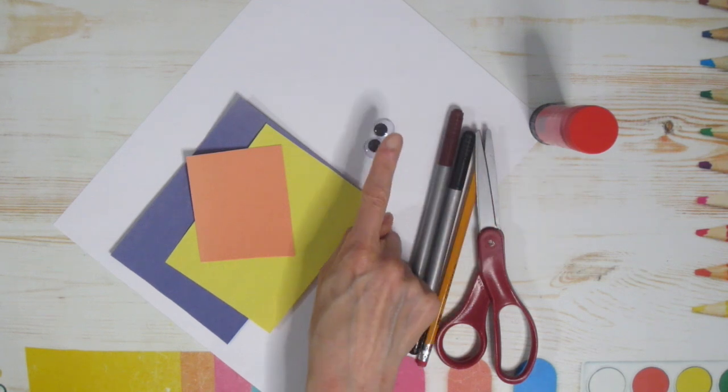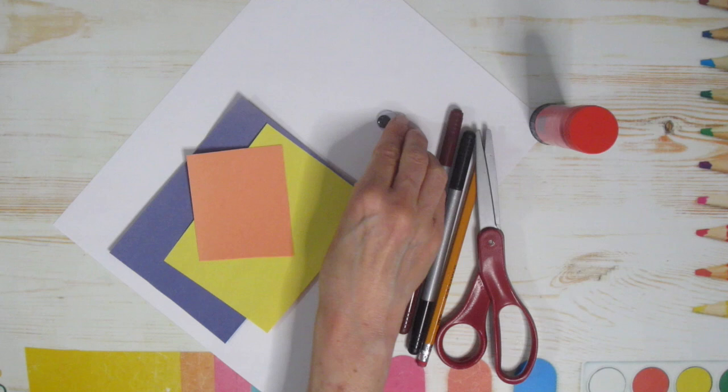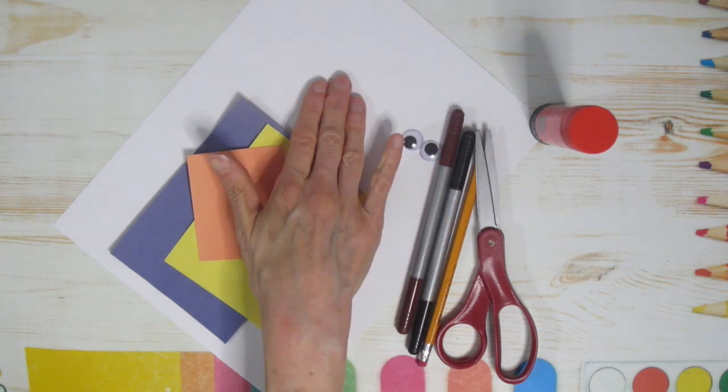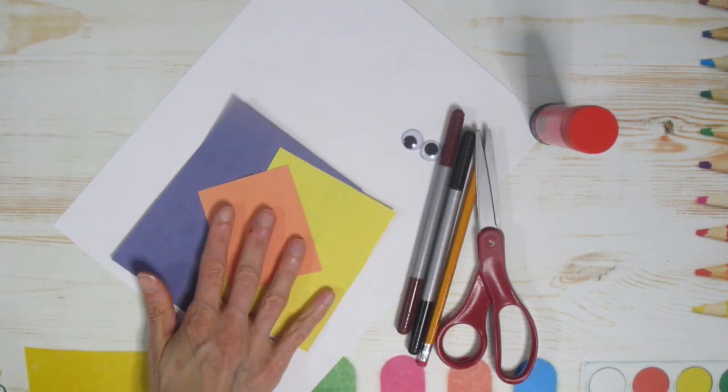I have some googly eyes. If you don't have googly eyes you can always just make your eyes out of white paper and black paper. You're going to need some paper for your card and then paper for your owl, whatever colors you would like.